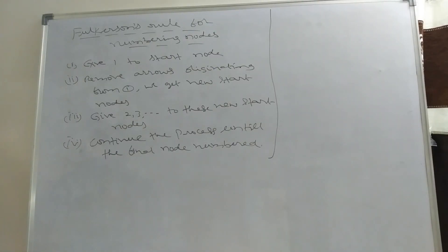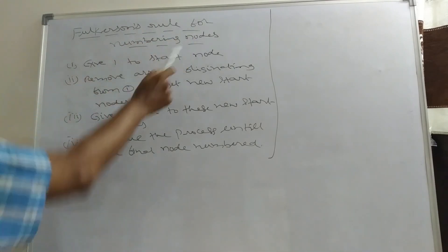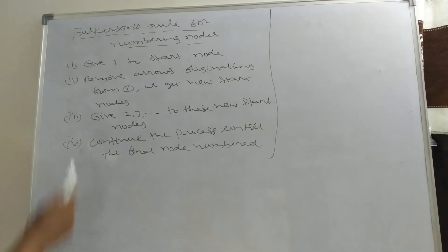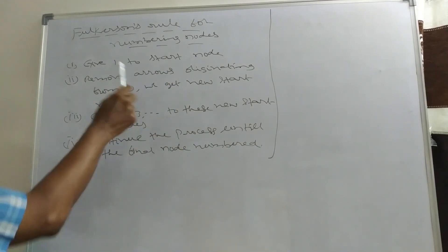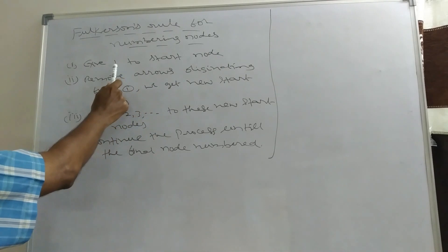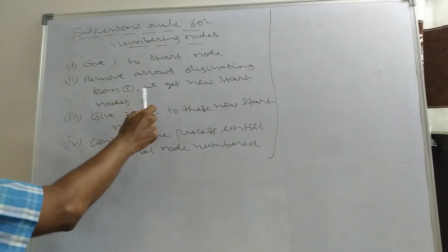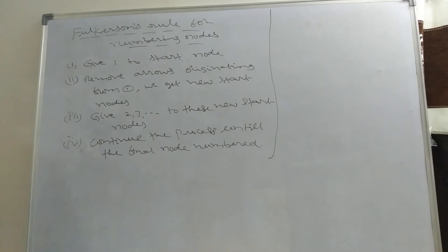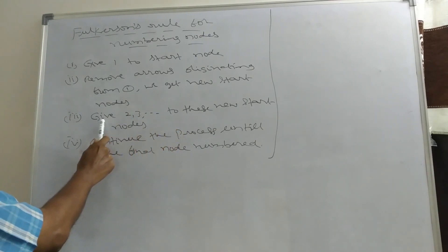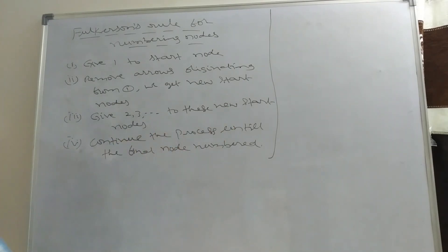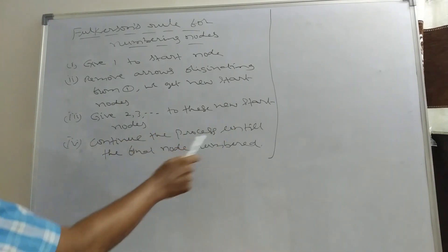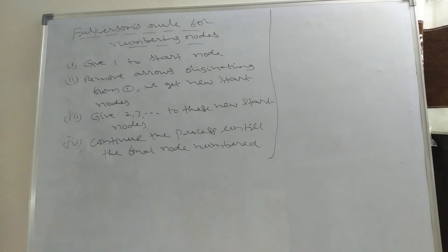There is a rule for numbering nodes called Fulkerson's rule. Assign number 1 to the start node. Remove all arrows originating from node 1; the resulting nodes with no incoming arrows form a new set of starting nodes. Assign consecutive numbers 2, 3, etc. to these. Continue the process until the final node is numbered.